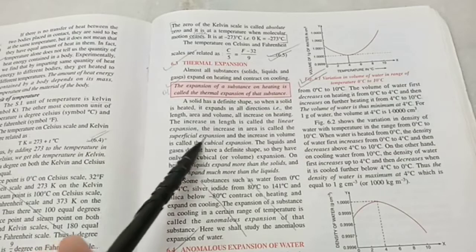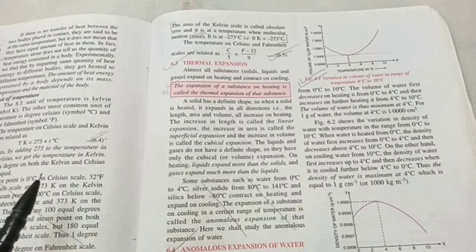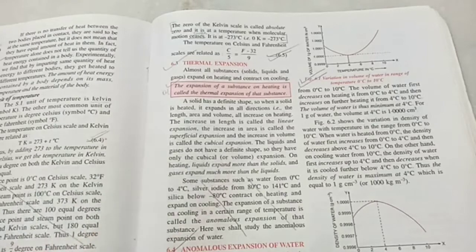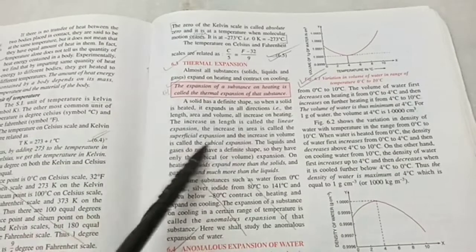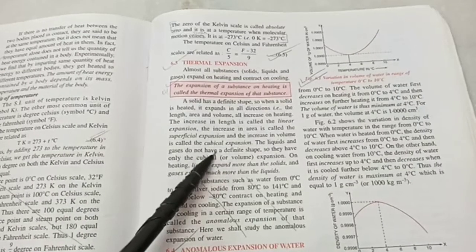And if it's a three-dimensional object, then the length, breadth, height will increase, that is called cubical expansion. For solids, we can have either of the three expansions. But for liquids and gases, we only have cubical expansion.